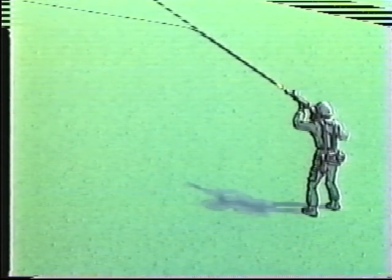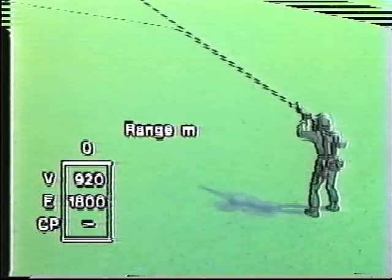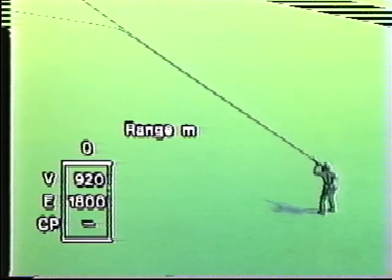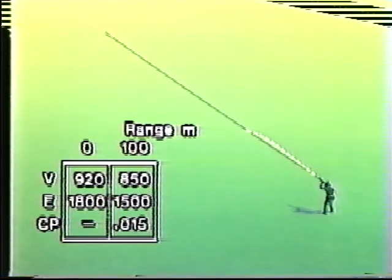Bullet velocity and energy decrease with range, while the culminating point—the highest point in the bullet's trajectory—increases with range. At the muzzle, bullet velocity is 920 meters per second and the energy is 1,800 joules. At 100 meters, velocity and energy show a marginal decline. The culminating point is a small fraction of a meter over the line of sight.